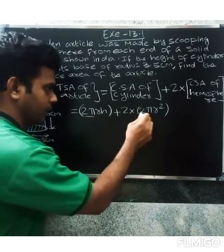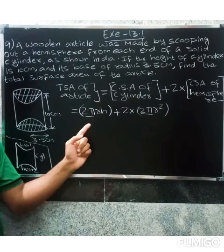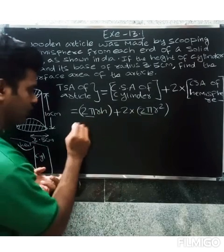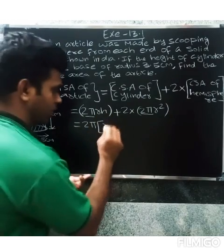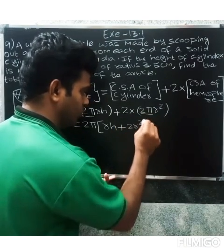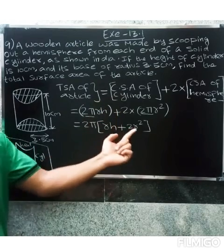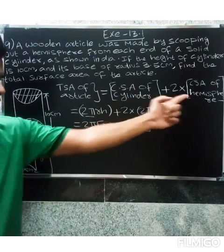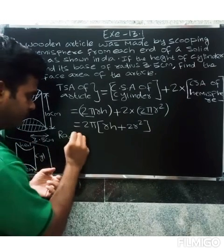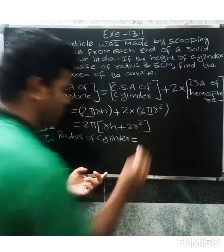We can take 2π as common. Note that the radius of the cylinder and the radius of the hemisphere are the same - because the hemisphere is scooped from the end of the cylinder. So radius of cylinder equals radius of hemisphere, which is 3.5 cm.